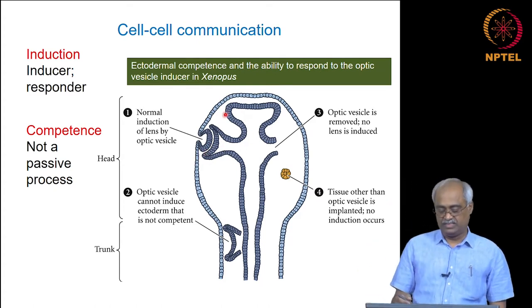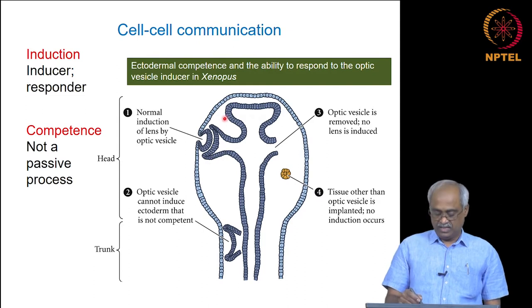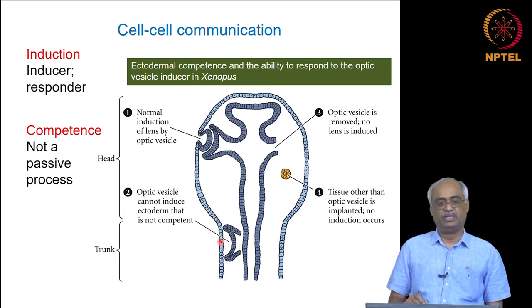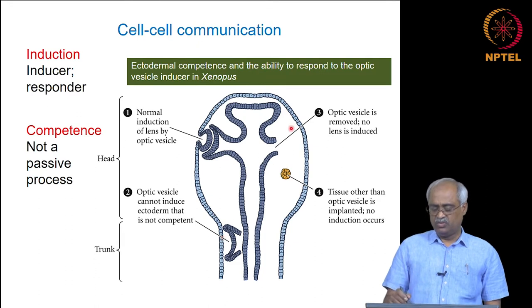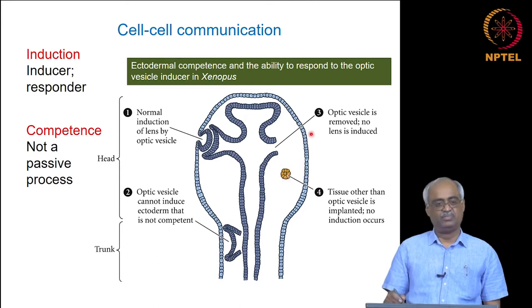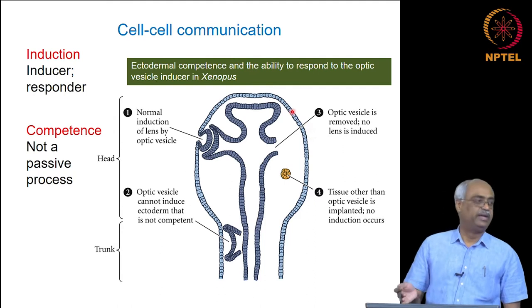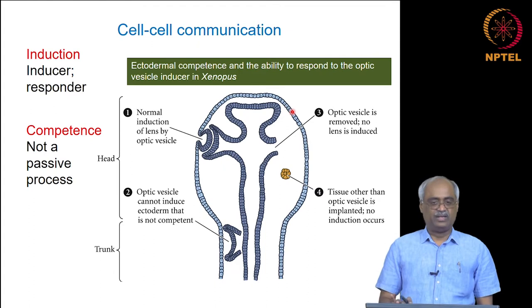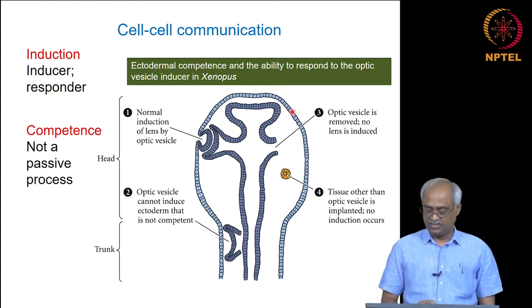This can be experimentally tested: if you take the optic vesicle and place it at a lower ectoderm, that is not going to induce lens formation there. Similarly, if you do not have the underlying optic vesicle, this ectoderm is not going to form a lens, and putting some other tissue there is not going to induce it either. Induction and competence work together in tandem — it is fairly straightforward.